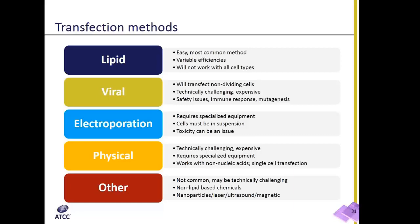The next method on the list is electroporation. Electroporation actually involves a device that delivers an electrical pulse to your cells. The electrical pulse opens pores in the cell membrane, allowing the DNA or RNA to move through the pores into the cell. One of the negative features of this method is high cell mortality post-transfection, so this method is really only used for hardy continuous cell lines that you can grow into large cell numbers.